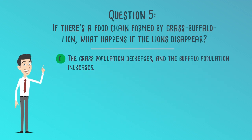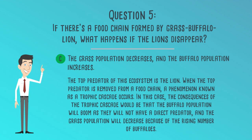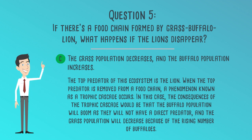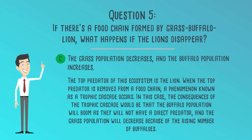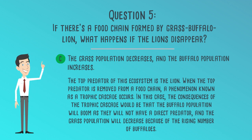Answer C. The grass population decreases and the buffalo population increases is the correct answer. The top predator of this ecosystem is the lion. When the top predator is removed from a food chain, a phenomenon known as a trophic cascade occurs. In this case, the consequences of the trophic cascade would be that the buffalo population will boom, as they would not have a direct predator, and the grass population will decrease because of the rising number of buffaloes.